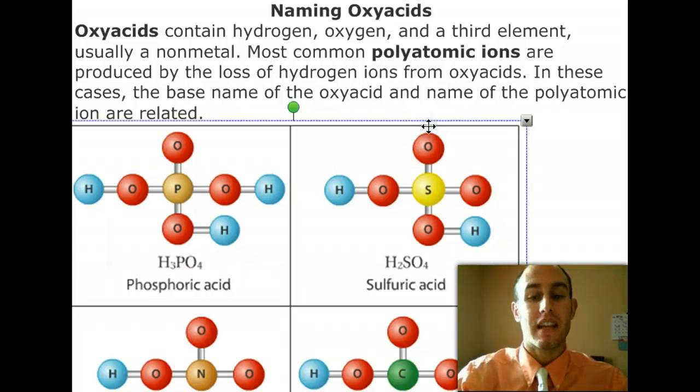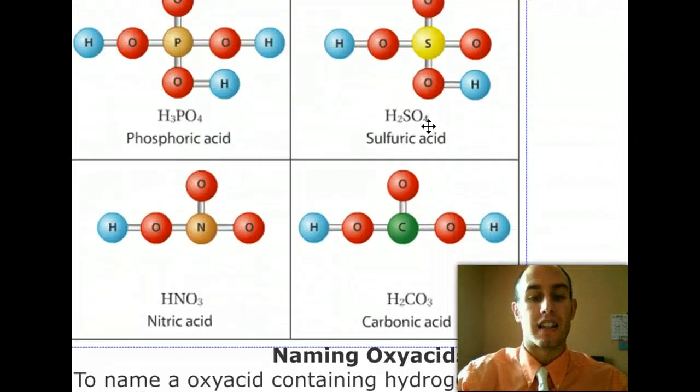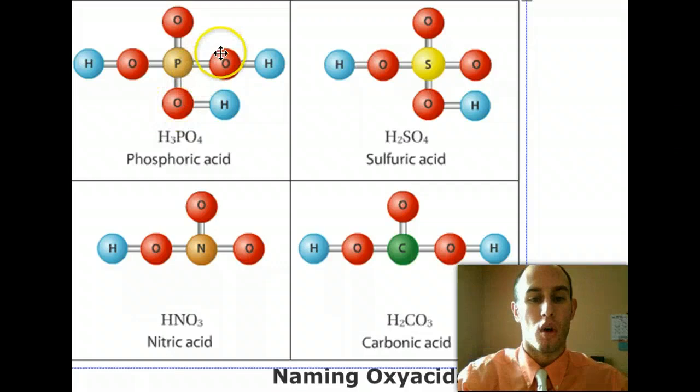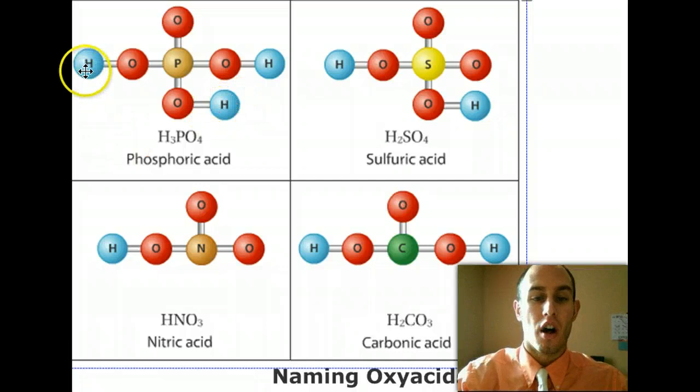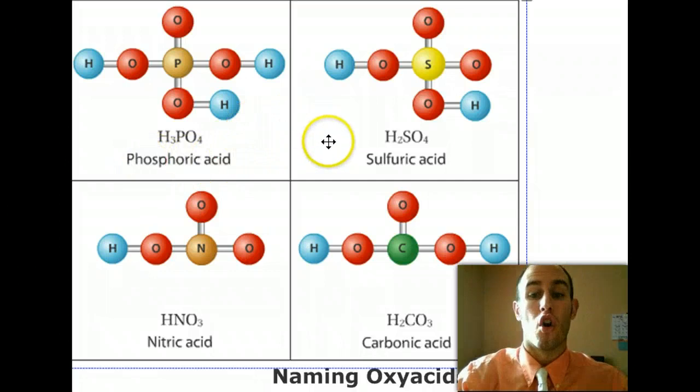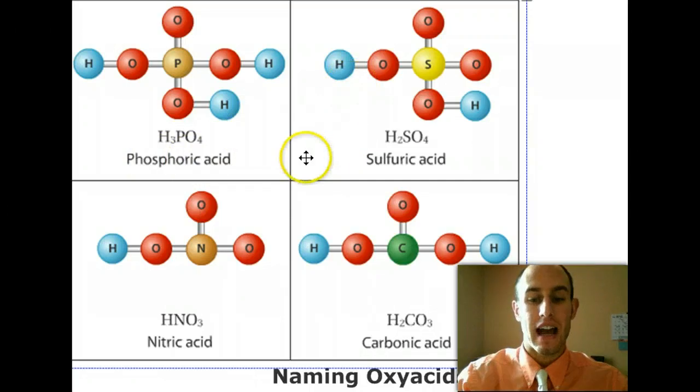Looking at some examples here, we have phosphoric acid, in which it's typically phosphate, PO4, and it's a negative 3 charge. Well, it has three hydrogens on the molecule to balance the negative 3 charge, and it becomes phosphoric acid. The same with sulfate becomes sulfuric acid.